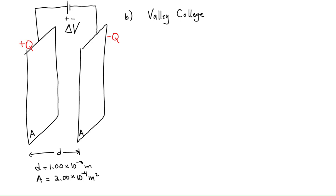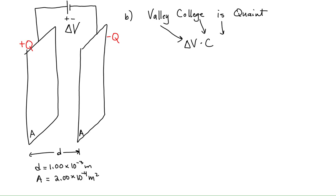'Valley College is quaint' — since I teach at West Valley College, it's fitting. The word 'valley' gives us the potential difference, 'college' gives us the capacitance, 'is' is the equal sign, and 'quaint' is the charge. Potential difference times capacitance equals charge. This is just a variation of our definition of capacitance — charge divided by magnitude of potential difference — remembered as Valley College is quaint.